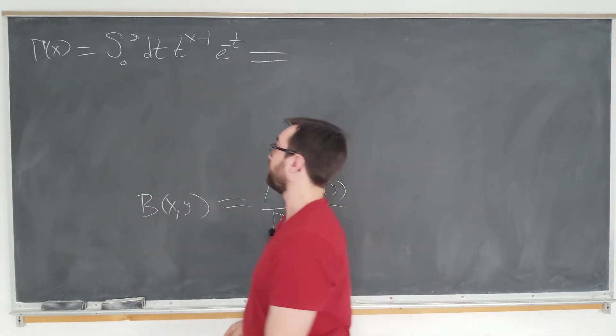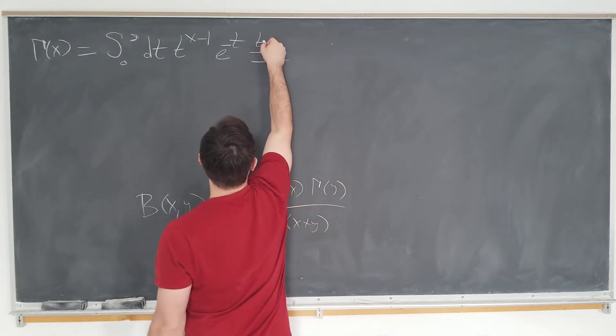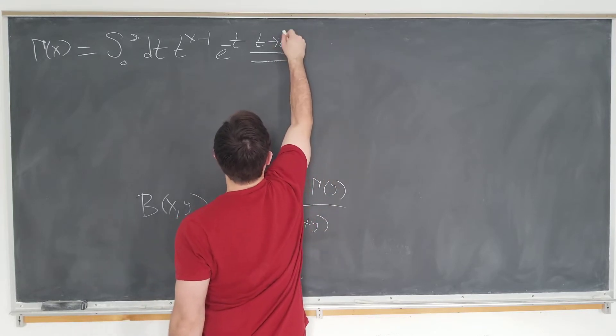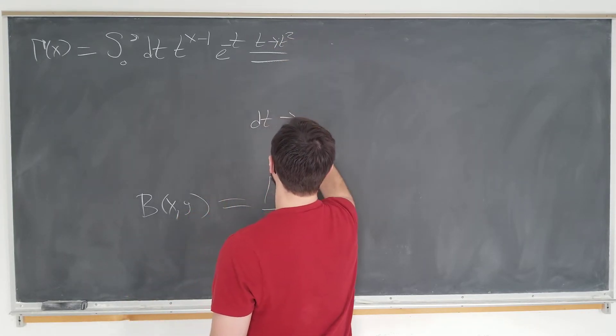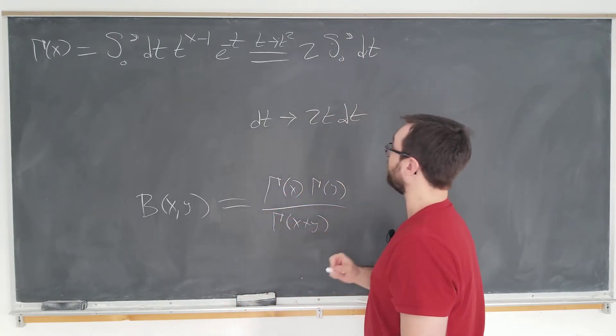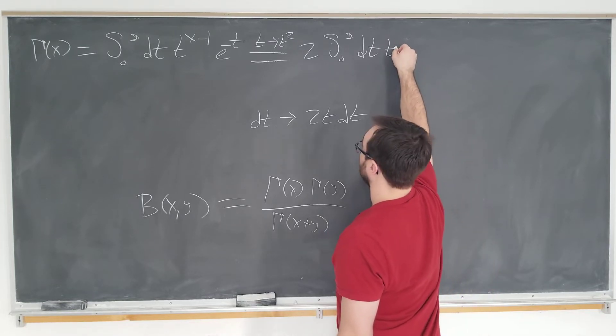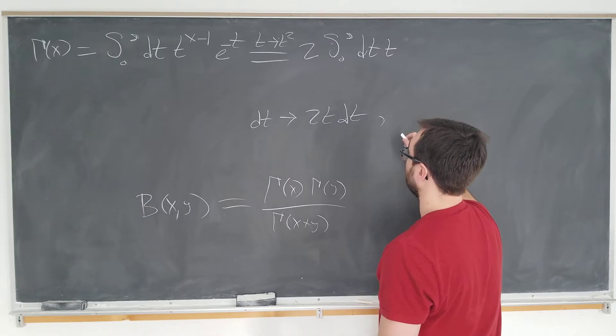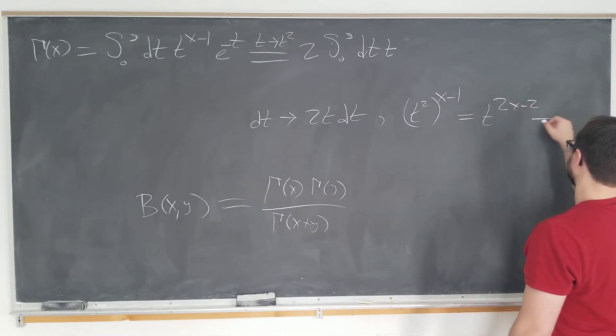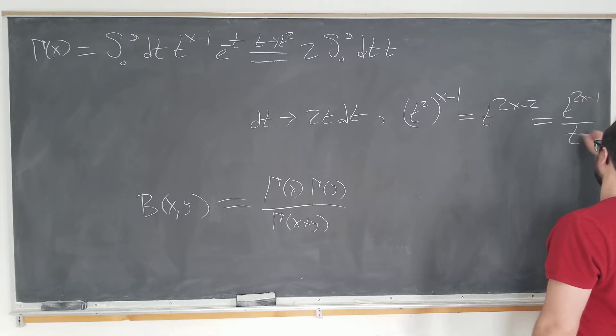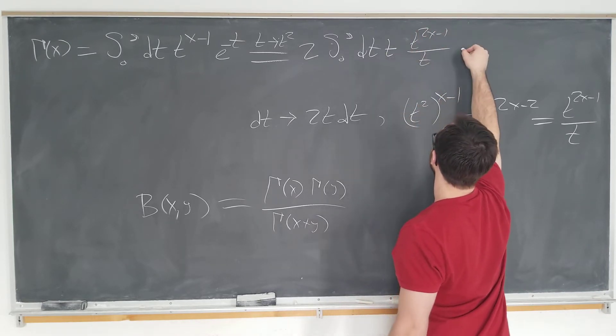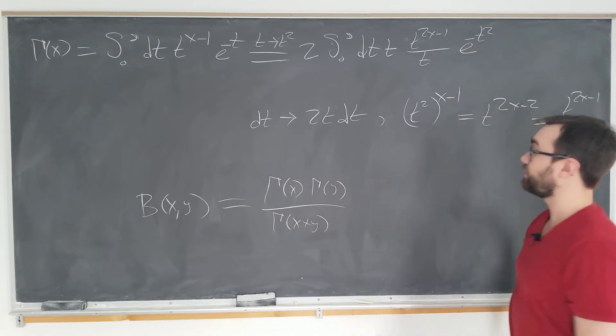And if we do a substitution here, if we let a variable t go to t squared, well, we of course have dt going to 2t dt. And this integral just becomes twice integral from zero to infinity, since the limits don't change. And we have an extra factor of t here, and we have t squared here. t squared to the x minus 1 power is t to the 2x minus 2 power, which we can rewrite as t to the 2x minus 1 over t, and write that here. Here, we see the e to the minus t becomes e to the minus t squared, a Gaussian now.